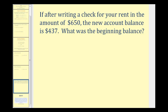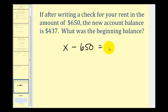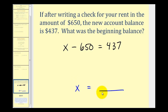If after writing a check for rent in the amount of $650 the new account balance is $437, what was the beginning balance? We'll write an equation to model this: by writing a check we're subtracting $650 from the beginning account balance, and the result is $437. So our equation is x minus $650 equals $437, where x is the beginning account balance. By solving for x, we'll determine the beginning balance. We don't want minus $650 on the left side, so we add $650 to both sides.